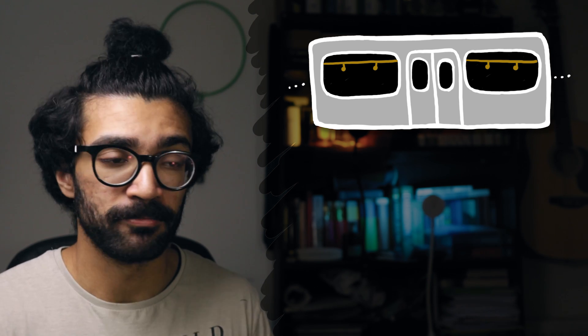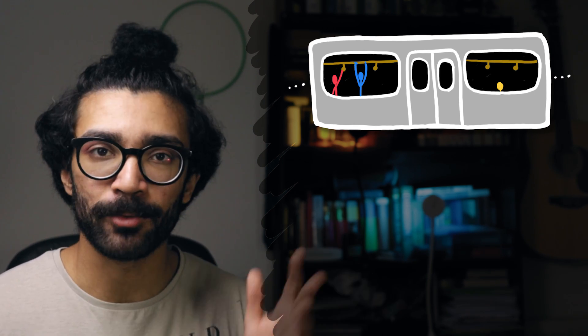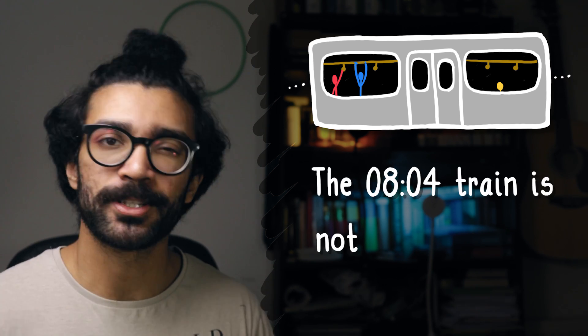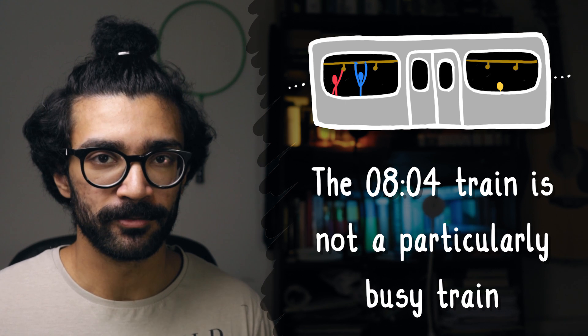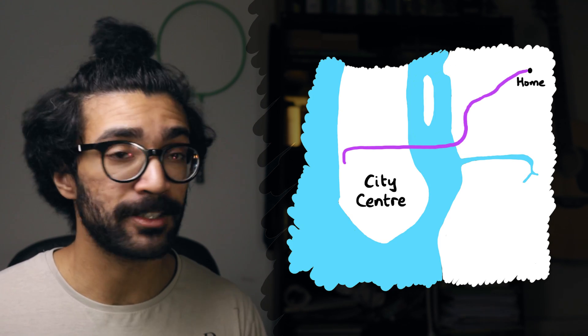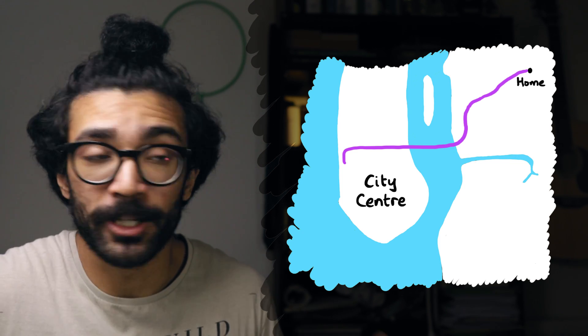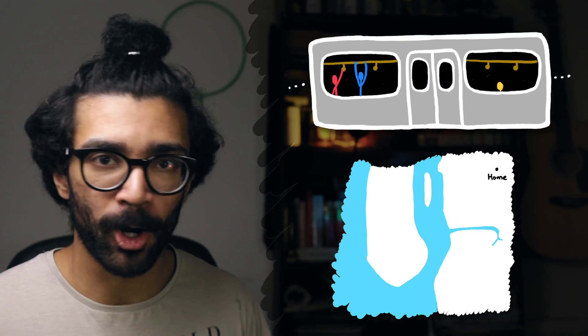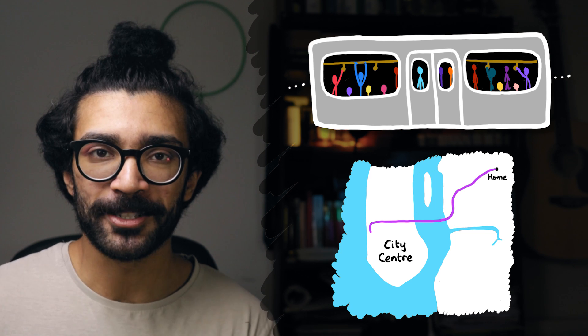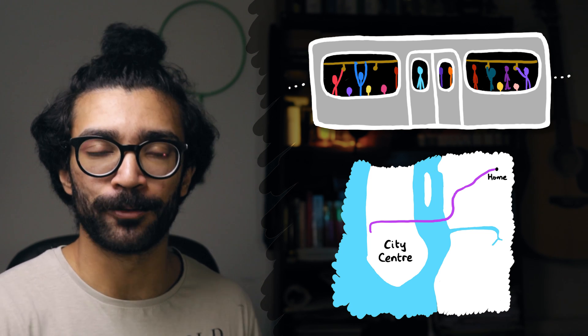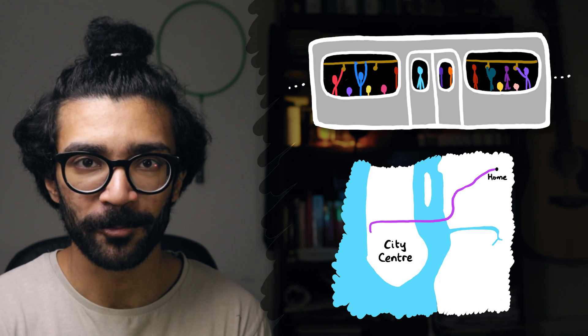Taking this train every day, we notice a pattern: the train isn't really busy between when we get on and when we get off. So we devise a little model — the 08:04 train is not a particularly busy train. And all is well and good until one day we have to head into the city centre. We take the train out of the stop nearest our house and head all the way to the end of the line. And we're absolutely floored — because even though the train isn't busy between our home stop and our work stop, as soon as we get closer to the city centre the train gets busier and busier.